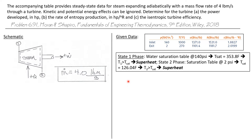I would also like to know the phase of each of the two states. The incoming steam state to a turbine should, of course, be superheated. We can go into the water saturation table at 140 psi — that's the inlet — and we get a saturation temperature of 353.8 degrees Fahrenheit. But our temperature is 1000 degrees Fahrenheit. So T1 is greater than the saturation temperature, meaning state one is superheated, which is what we expected.